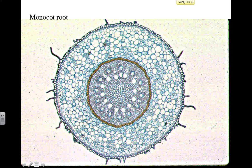The outermost part of the root — this kind of layer out here — goes all the way around the plant. That's going to be the epidermis. It's going to be there for protection and for absorption of nutrients. And then coming off the epidermis, you're going to have root hairs. The main function of the root hairs is going to be to increase surface area so that more water and nutrients can be absorbed.